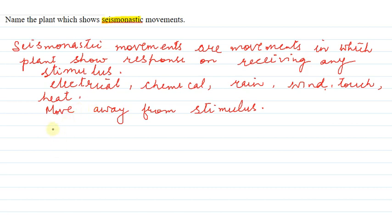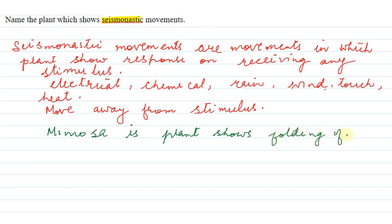The plant which shows seismonastic movement is Mimosa — Mimosa pudica is the plant. Yeh ek plant hai jo seismonastic movement show karta hai. It shows folding of leaves — yeh folding leaves ki dikhata hai. Jaise hi aap isko touch karte hain, iski leaflets jo hain wo fold ho jati hain when they are touched. Mimosa pudica is the full name of the plant which shows this type of seismonastic movement.